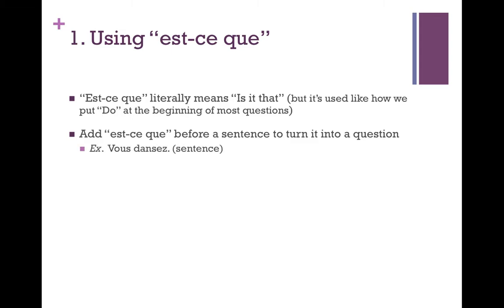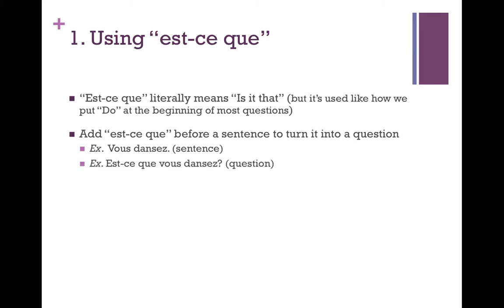So let's look at an example. If we have our sentence 'vous dansez,' which is 'you dance,' and we have the -ez at the end to match the vous because it's a regular ER verb, the way that we would turn this into a question using est-ce que is to just add that phrase at the beginning. We still have 'vous dansez,' but we just have the question mark at the end and est-ce que at the beginning. So our question becomes 'est-ce que vous dansez?' which means 'do you dance?'